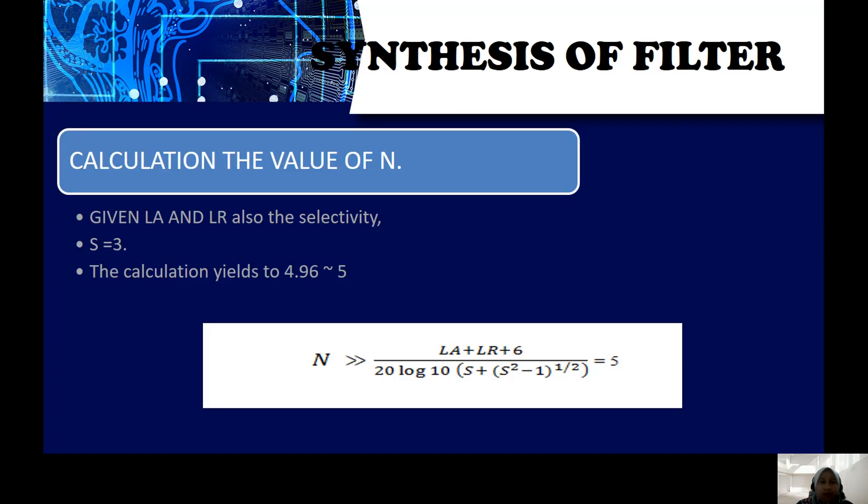The synthesis of the filter: firstly, you need to calculate the value of n. n is the order of the filter. By using this equation, the calculation yields to 4.96, which means the number of n is equal to 5.